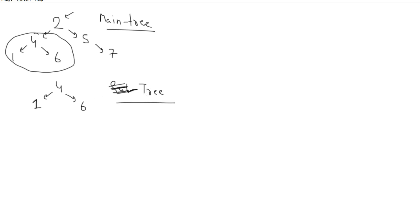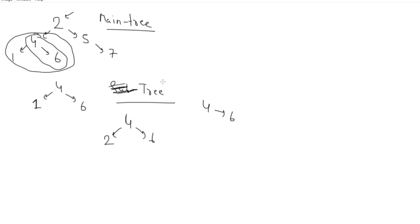Now let's say the given tree is 4, 2, 6 — this is not a subtree because we don't have that structure. But if it has 4 and 6 then yes, we can say this is a part of the main tree because this node matches. Now we'll look at the logic, time complexity, space complexity, and finally how to implement it in Java.